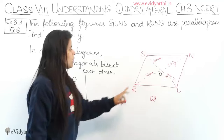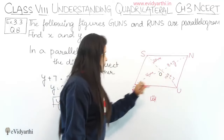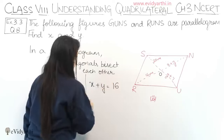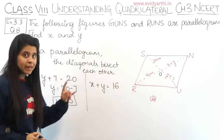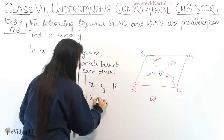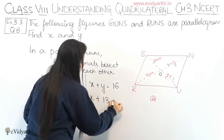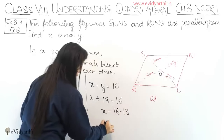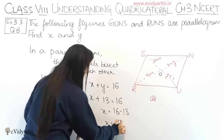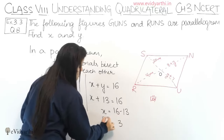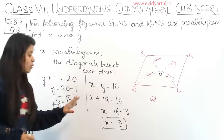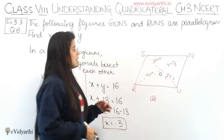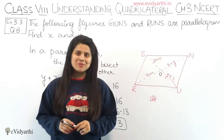Now that we have Y, we use ON equals OR: X plus Y equals 16 centimeters. Substituting Y equals 13, we get X plus 13 equals 16, so X equals 16 minus 13, which gives X equals 3. Therefore, for part 2, X equals 3 and Y equals 13 centimeters. This was the last part of this question.